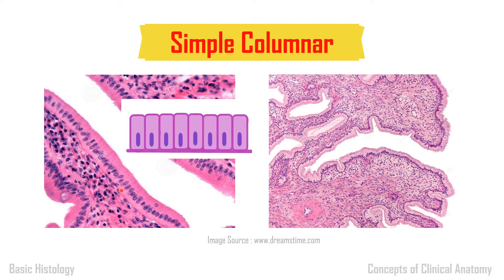Coming to simple columnar epithelium — as it is simple, all cells lie on the basement membrane in a single row. You can see an elongated nucleus close to the basement membrane. The height of the cell is more than the width, and the nucleus is elongated towards the basement membrane. Even at low power you can appreciate the single row of nuclei. Even if you can't appreciate the exact nucleus shape, you can see that all nuclei are close to the basement membrane — this is a clue for simple columnar epithelium.